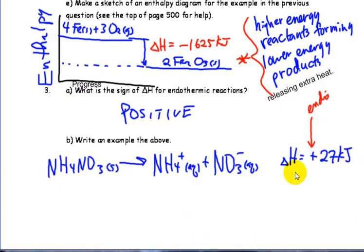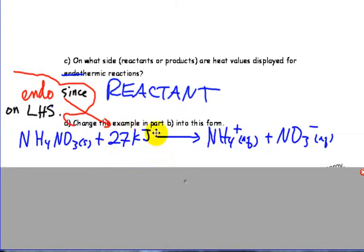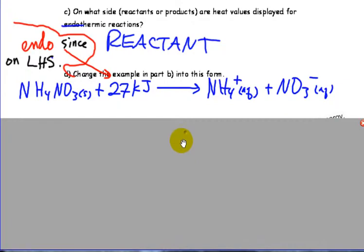But of course, if we were to insert that enthalpy into the equation itself, it would have to be a reactant since it's on the left-hand side. It's endo since it's on the left-hand side, and that also means that it has to be added in. Ammonium nitrate will not break down unless it has the available heat to add into the system in order for that to happen.